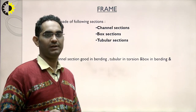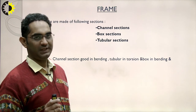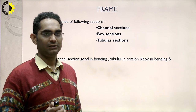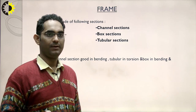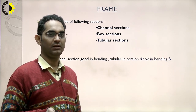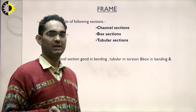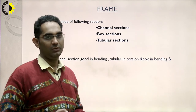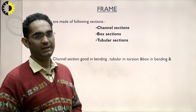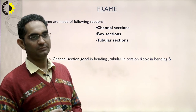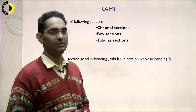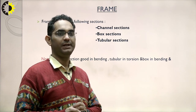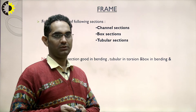Frames are made up of the following sections: channel sections, box sections, and tubular sections. Channel sections are good in bending, tubular sections are good in torsion, and box sections are good in both bending and torsion.